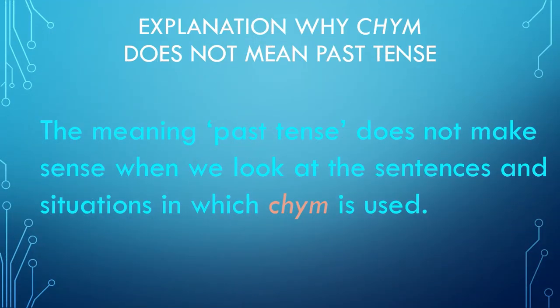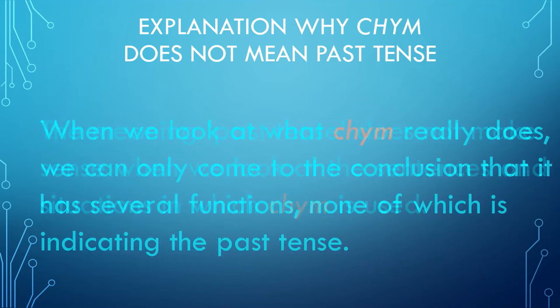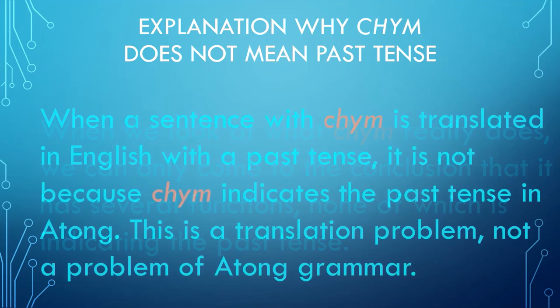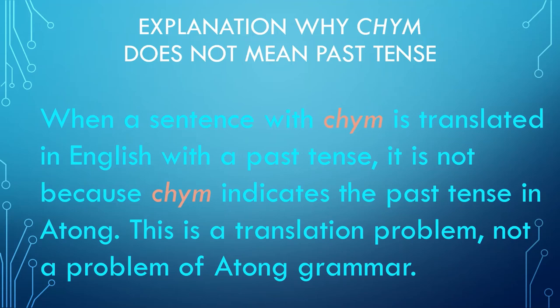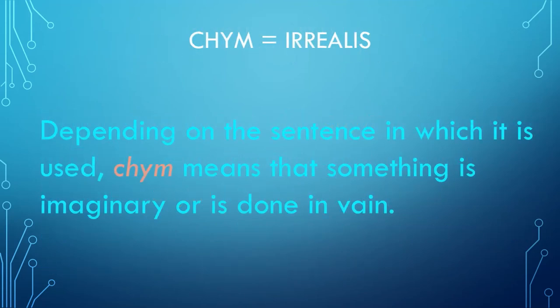So how do we know that Chm does not mean past tense? Well, the meaning past tense does not make sense when you look at the sentences and situations in which Chm is used. When we look at what Chm really does, we can only come to the conclusion that it has several functions, none of which is indicating past tense. When a sentence with Chm is translated into English with the past tense, it is not because Chm indicates the past tense in Atong — this is a translation problem, not a problem of Atong grammar. Depending on the sentence, Chm means that something is imaginary or is done in vain.